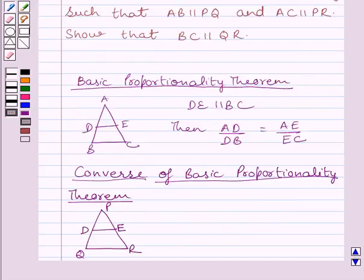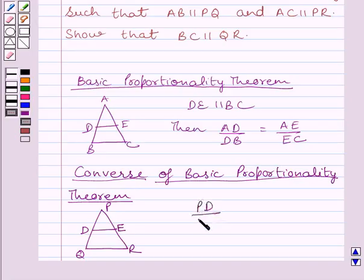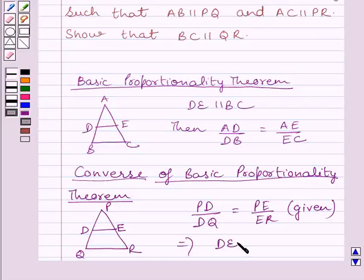Now let us understand the converse of the Basic Proportionality Theorem. It states that if a line divides any two sides of a triangle in the same ratio, then the line is parallel to the third side. That is, if in triangle PQR, DE is dividing PQ and PR in the same ratio — PD upon DQ is equal to PE upon ER — then DE is parallel to QR.